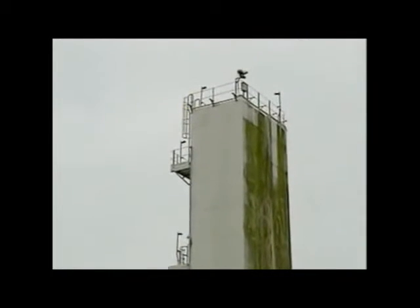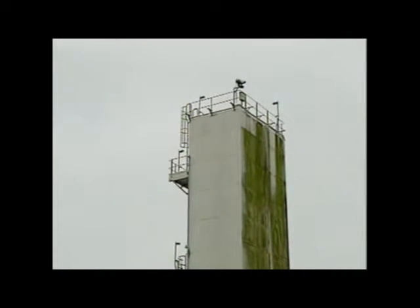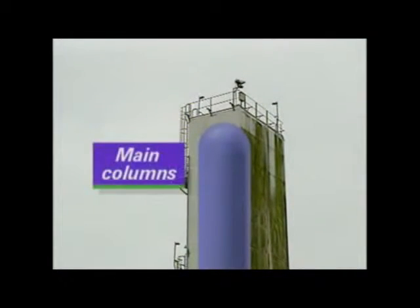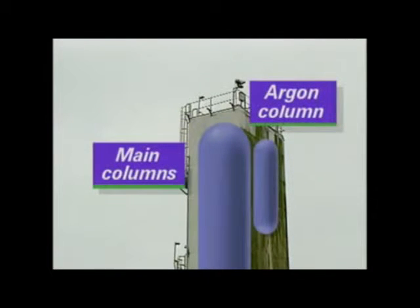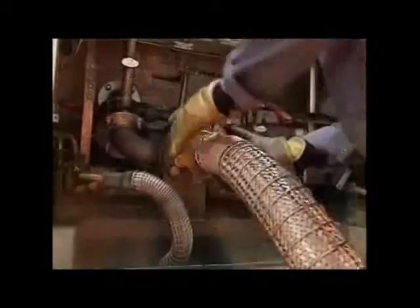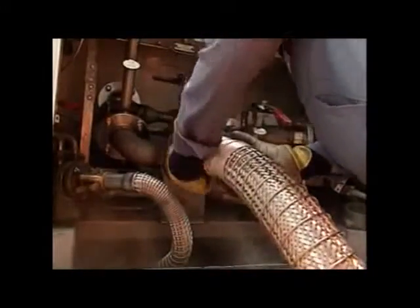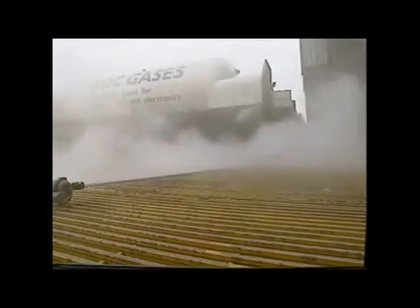Argon is separated as a by-product from the oxygen-rich liquid in a side column by further fractional distillation. Small quantities of gases can be supplied to customers in cylinders. Larger quantities of air products are supplied as liquids in refrigerated tankers.